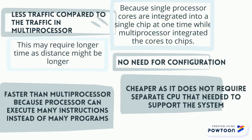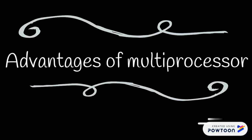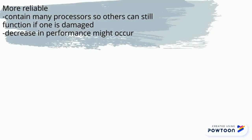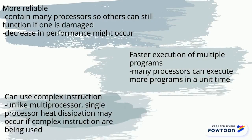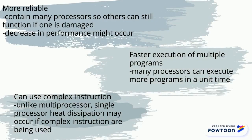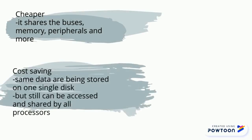Advantages of single processor: less traffic compared to multi-processor, no need for configuration, and faster than multi-processors because the processor can execute many instructions instead of many programs. Now let's look at the advantages of multi-processors: they are more reliable, allow faster execution of multiple programs, and can handle complex instructions.